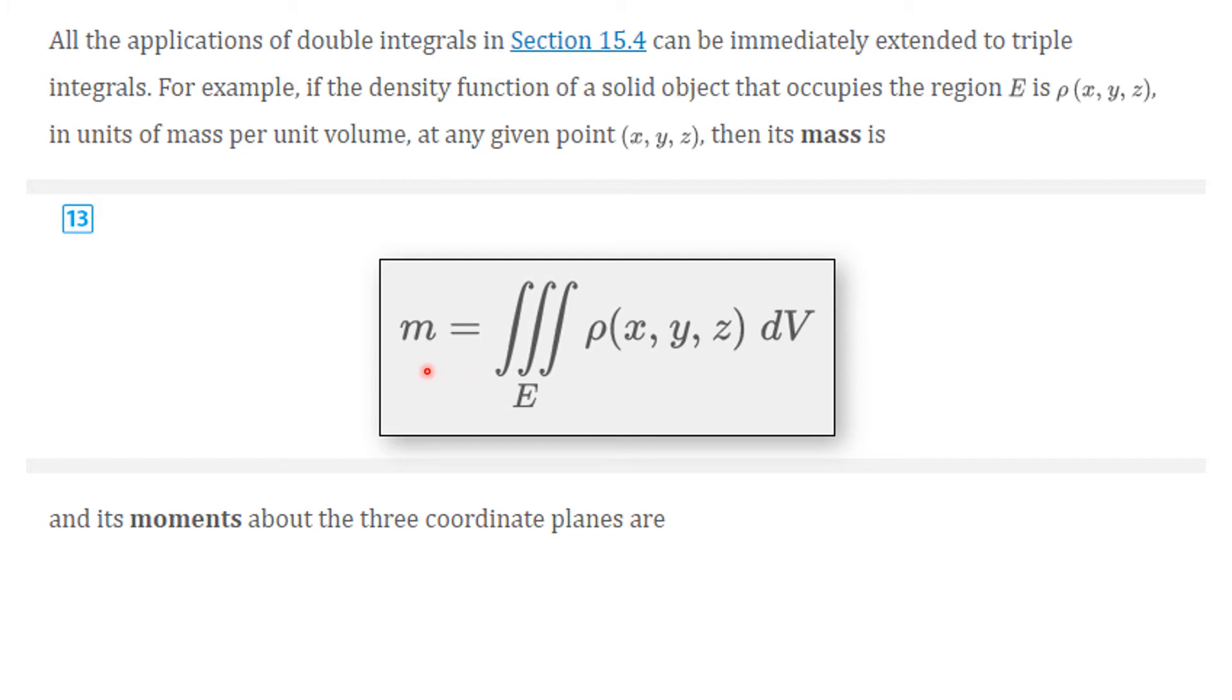And so this is just really taking density equals mass over volume and dealing with it in a continuous setting. So the mass is equal to the triple integral over E. This is the mass of E. It's going to be rho, the density of x, y, z, dv. And the moments about its three-coordinate planes also are going to be defined similarly.